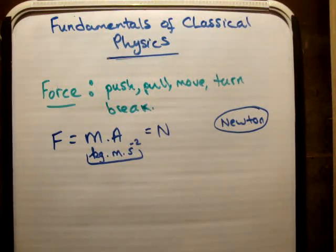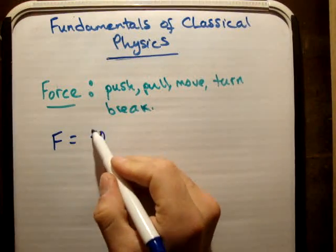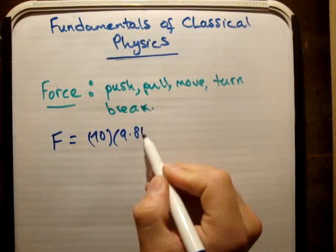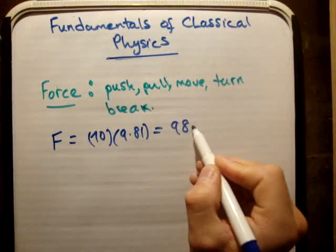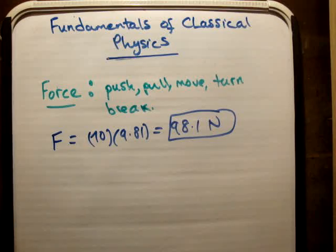So say for example, you had a calculation like so. F is equal to 10 times 9.81 is equal to 98.1 Newtons. That is a force. If you see the letter N, it's a force, and that's all I've got to say at the moment about a force.